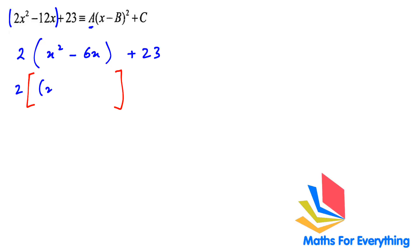So we write (x -). The negative sign is for this negative. If you have a negative you put negative. If you have a positive you put positive. Then the number with x you divide by 2. 6 divided by 2 is 3. Close the bracket put a square.